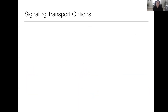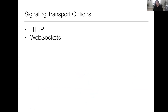Next up, we'll talk about signaling options, or transport options for signaling. The cool thing about SDPs and ICE is that all of this stuff is just plain text. So any transport method that can transport plain text will work for this negotiation process. HTTP is a really common one, like HTTP polling, as well as WebSockets — I would say WebSockets is probably the most common method. And then there's also MQTT, more specifically MQTT over WebSockets, as another option.